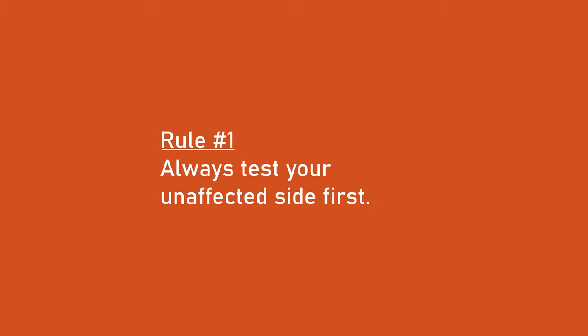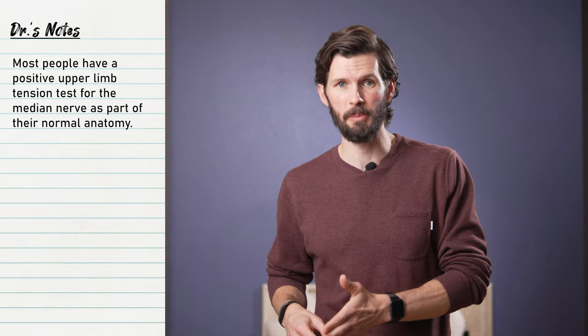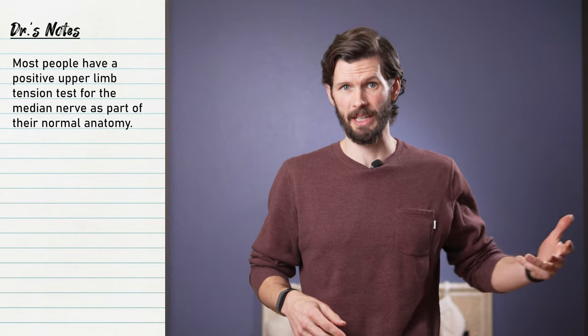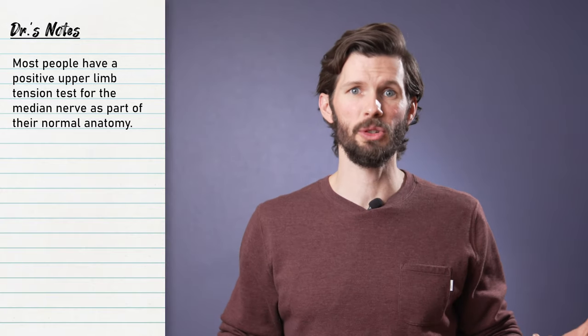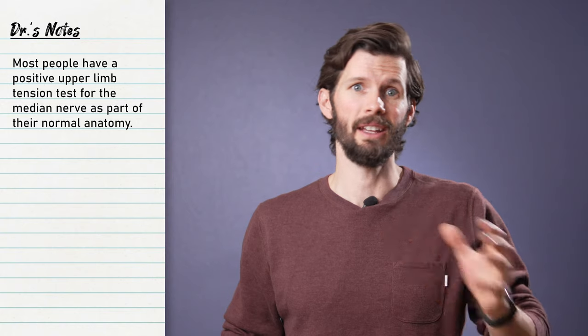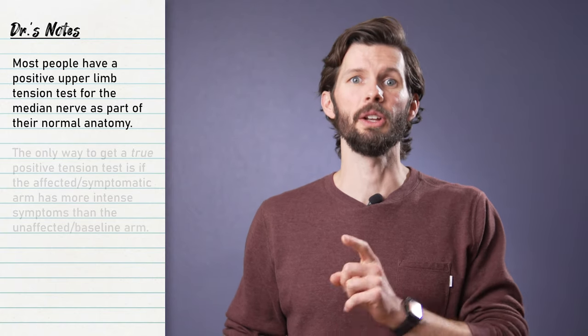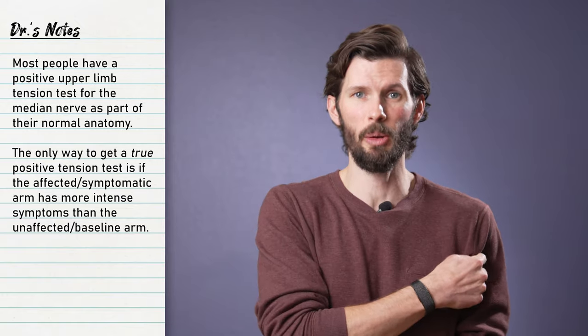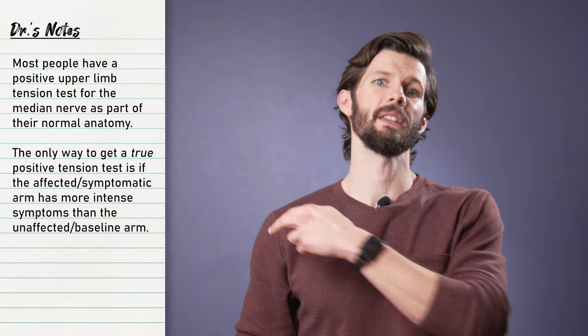Before we get to the tests, we need to understand three important rules of neural tension testing. Rule number one: you should always do this on your unaffected side first in order to create a baseline, because many of you may find you have some level of neural tension. Studies have shown a majority of people have a positive first tension test for the median nerve — this doesn't mean dysfunction, it is just our normal anatomy. A true positive tension test only occurs if the affected arm has greater or more intense symptoms than the unaffected arm.